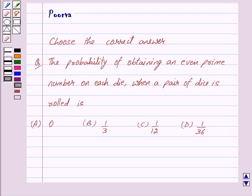Hi friends, I am Purva, and today we will discuss the following question. Choose the correct answer: The probability of obtaining an even prime number on each die when a pair of dice is rolled is (a) 0, (b) 1/3, (c) 1/12, (d) 1/36.